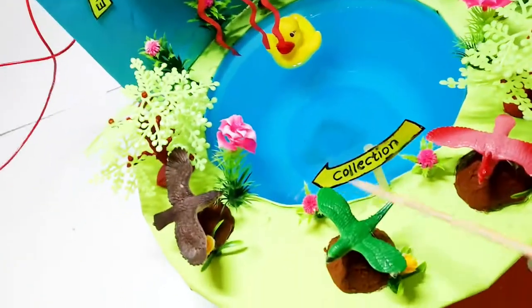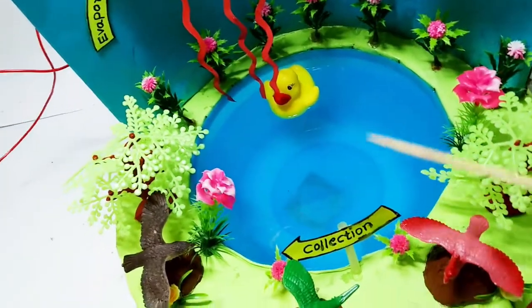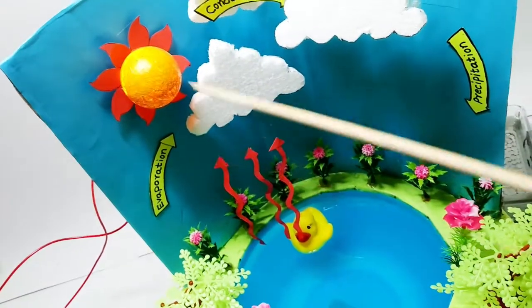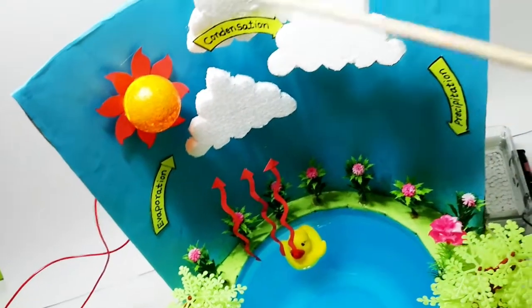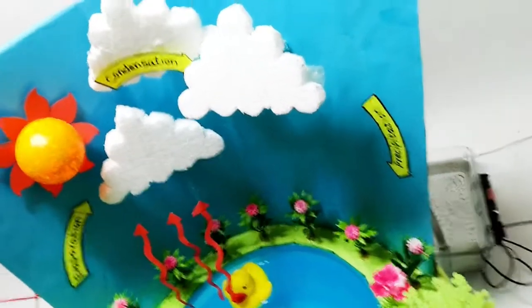We have placed water as the ocean, pond, or river. When water gets evaporated because of sunlight, it gets condensed on the cloud. Now I'm going to demonstrate this by switching on the motor.